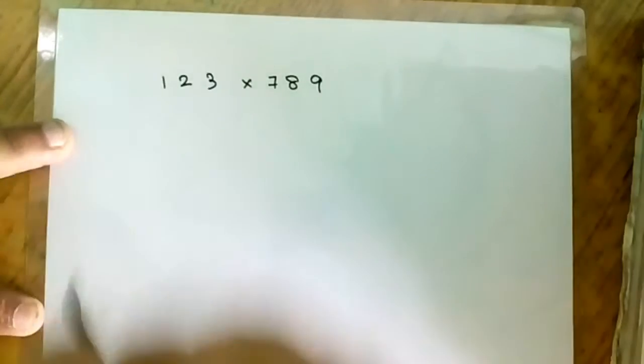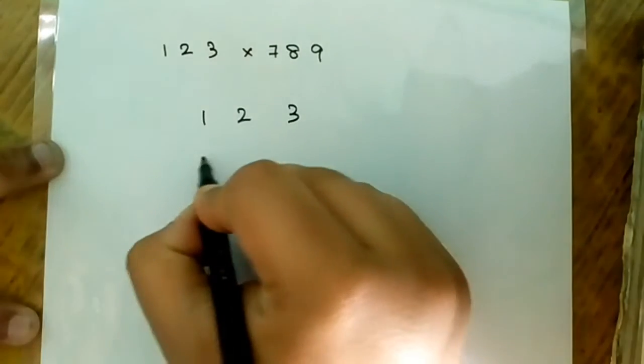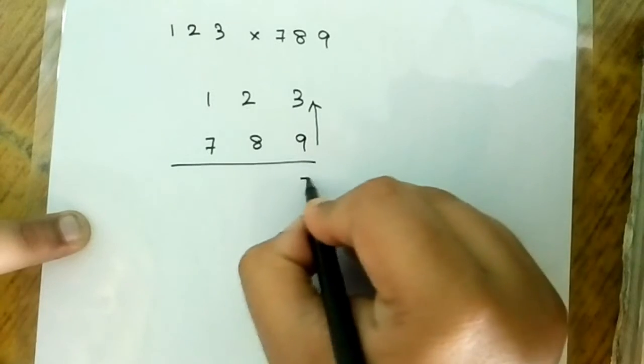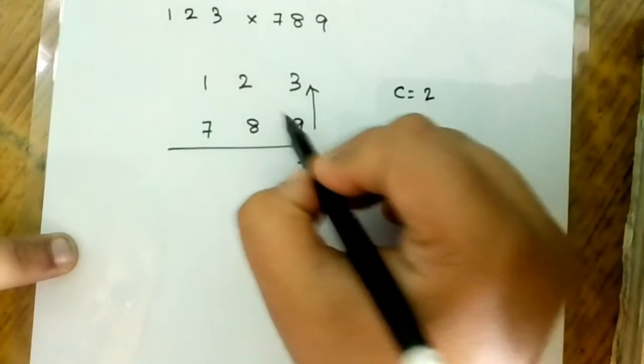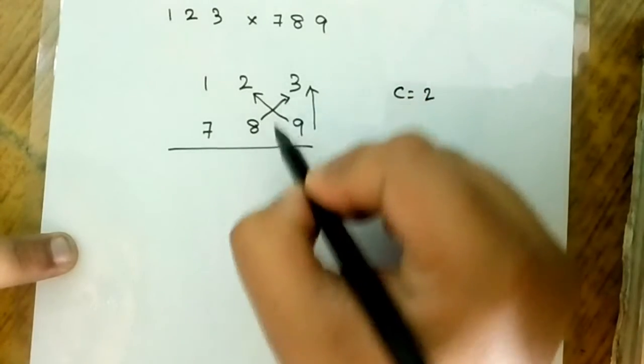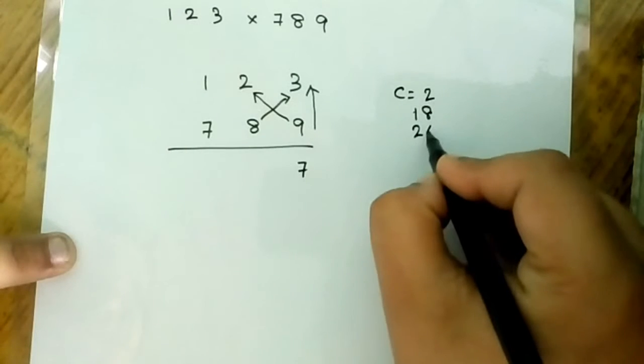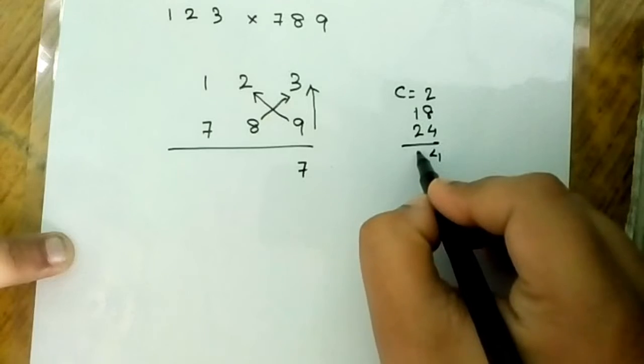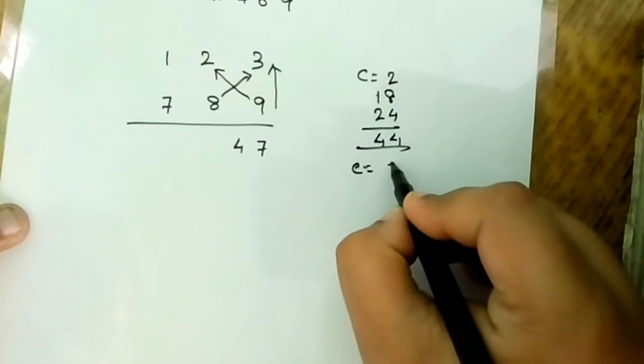The same process, down to up: 9 into 3 is 27, carry 2. Now crossword: 9 into 2 is 18, 8 into 3 is 24. 18 plus 24 plus 2 equals 44. I will write 4 here, carry is 4.